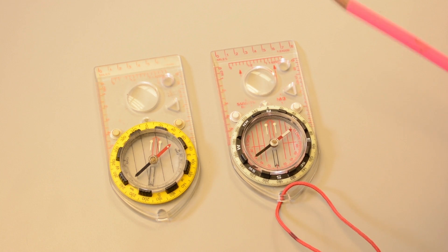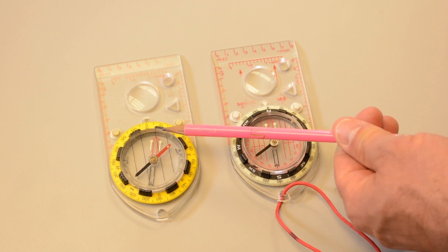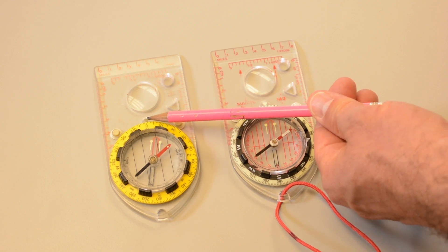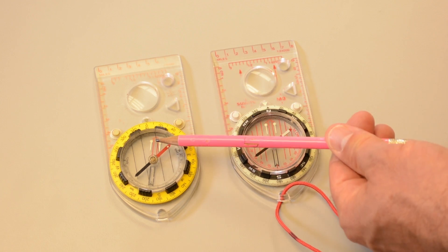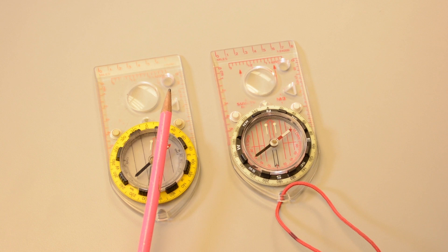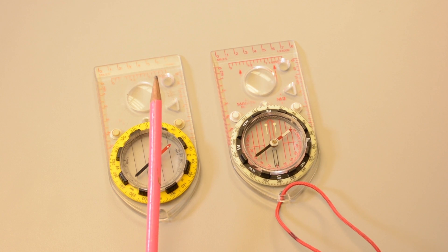Now let's look at the yellow compass, which is adjusted for a local declination in Oregon of 16 degrees east. Notice with the compass dial also set to zero, the shed or orienteering arrow is now pointed off from true north to about 16 degrees or to the east. This is set up for the correct local declination.